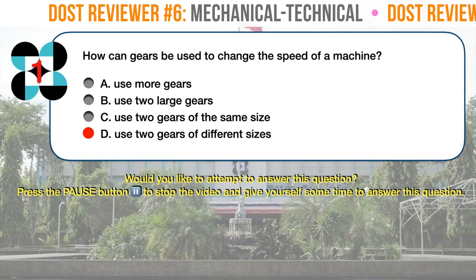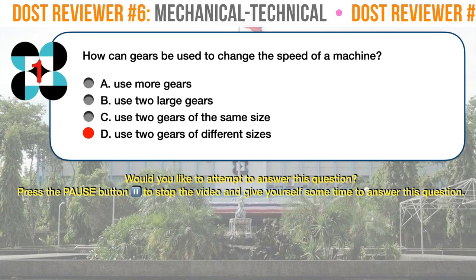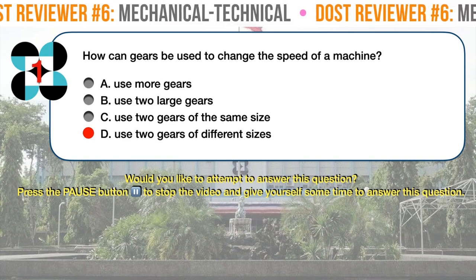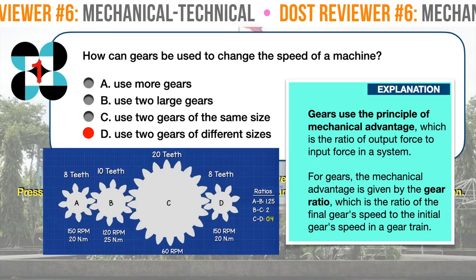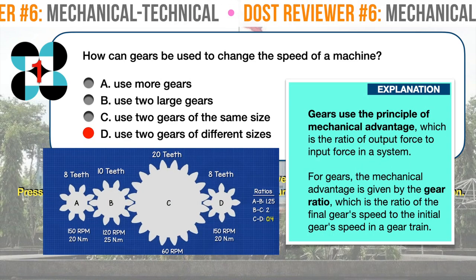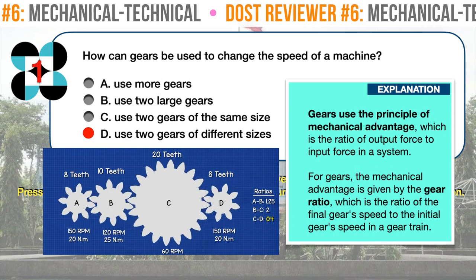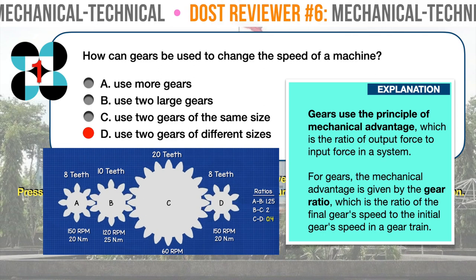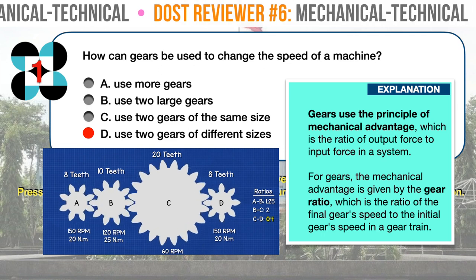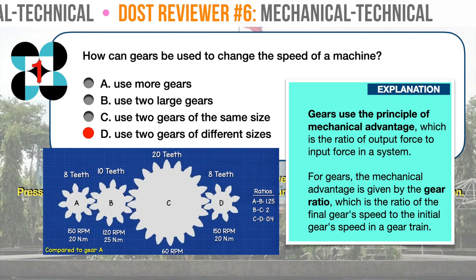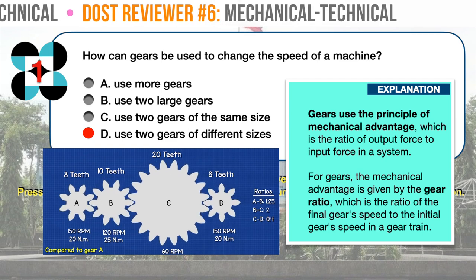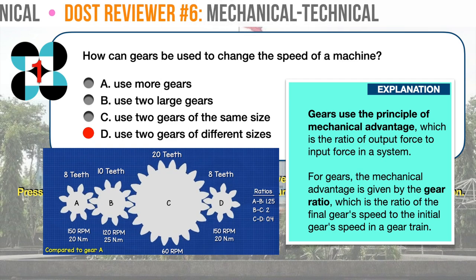Changing gears on a 10-speed bicycle is a good example of using different size gears to change speed. Gears use the principle of mechanical advantage, which is the ratio of output force to input force in a system. For gears, the mechanical advantage is given by the gear ratio, which is the ratio of the final gear speed to the initial gear speed in a gear train.